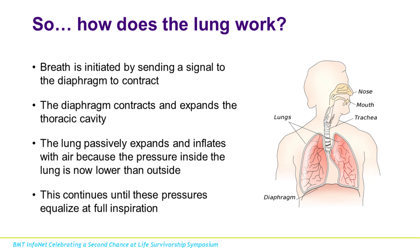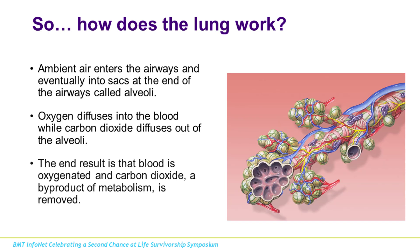Now let's talk about how the lungs work. Breath is initiated by sending a signal from the brain to the diaphragm to contract — an involuntary signal, though you can also voluntarily initiate a breath. The diaphragm contracts, expanding the thoracic cavity, creating negative pressure. That negative pressure causes the lung to passively expand and inflate with air because the pressure inside is now lower than outside. This continues until full inspiration, at which point you can passively or forcefully exhale.